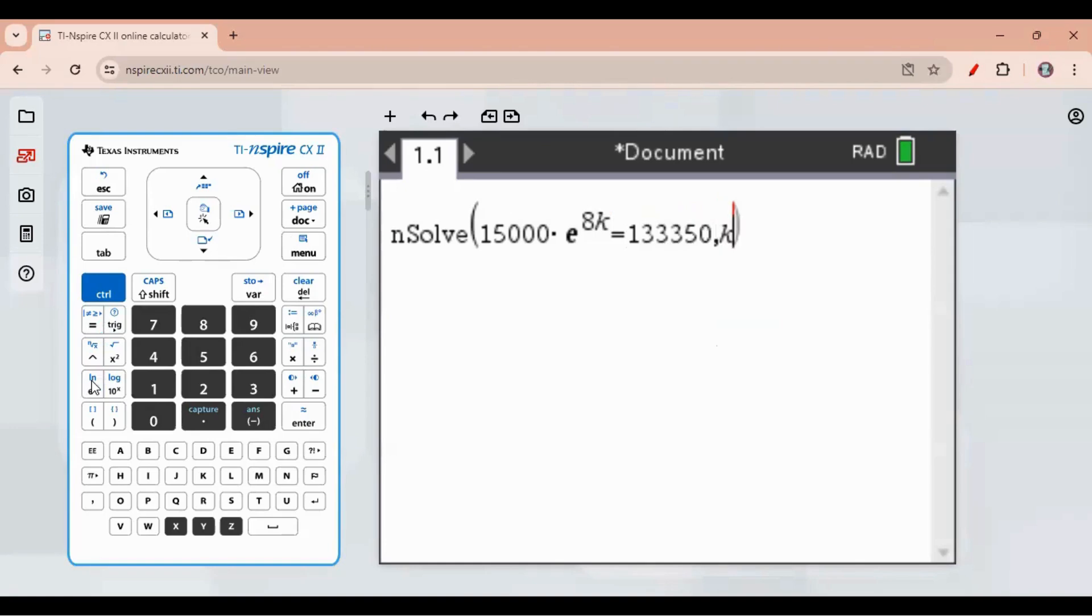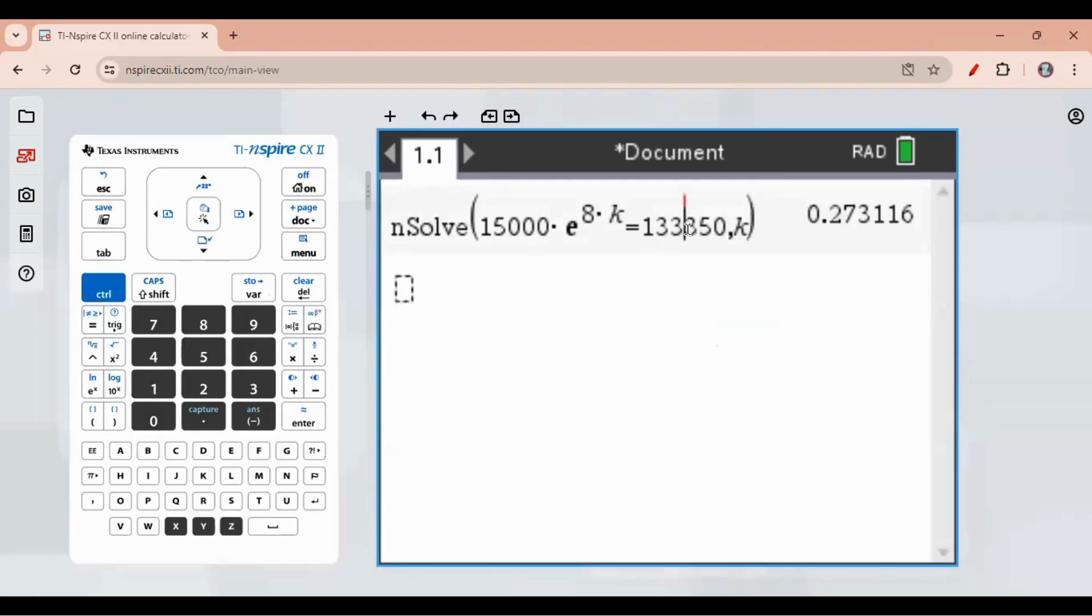what variable we are solving. That's it. When you click enter, you will get, oh, I made an error. It's 13,350. So it's negative 0.01446. They said k is negative and we got the same. So now getting back to the board.